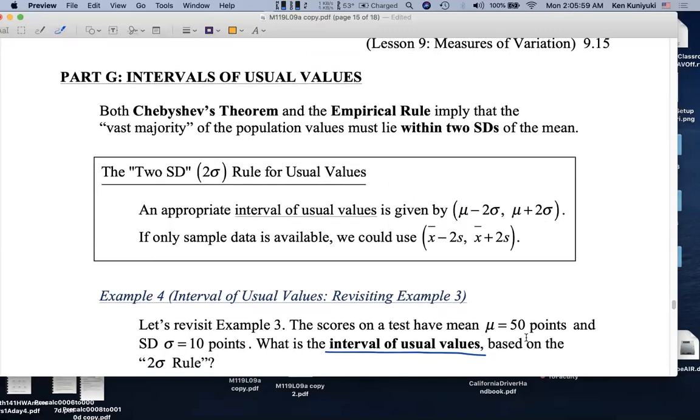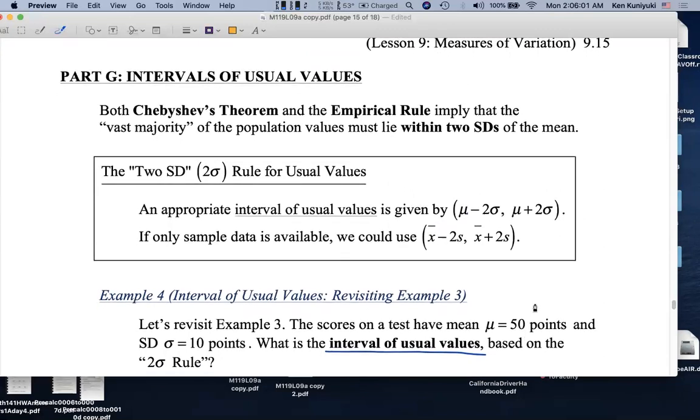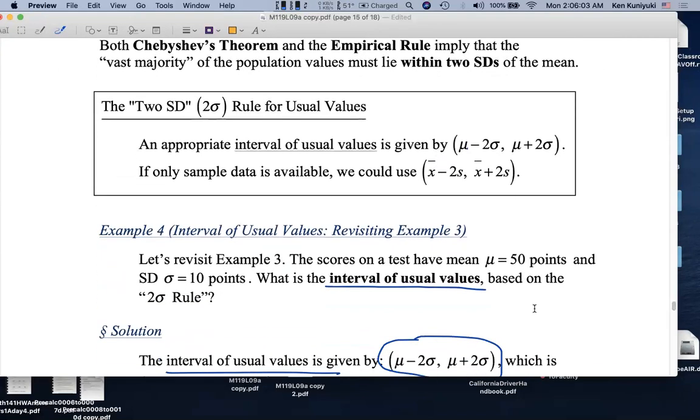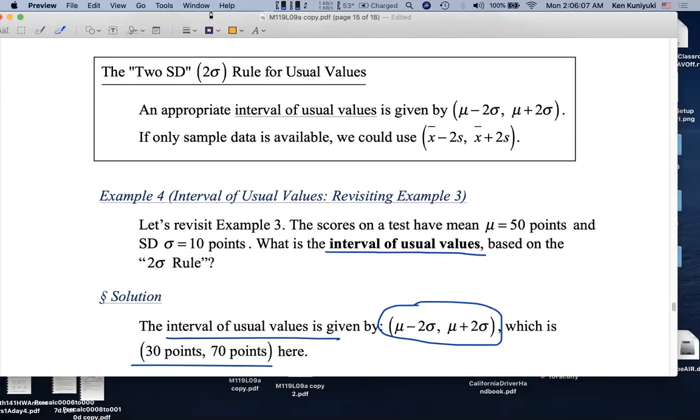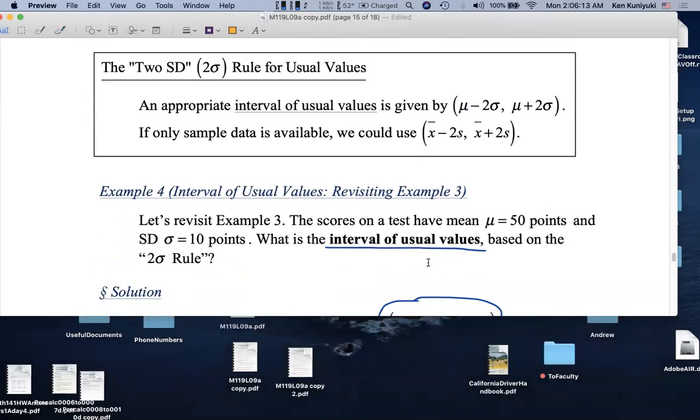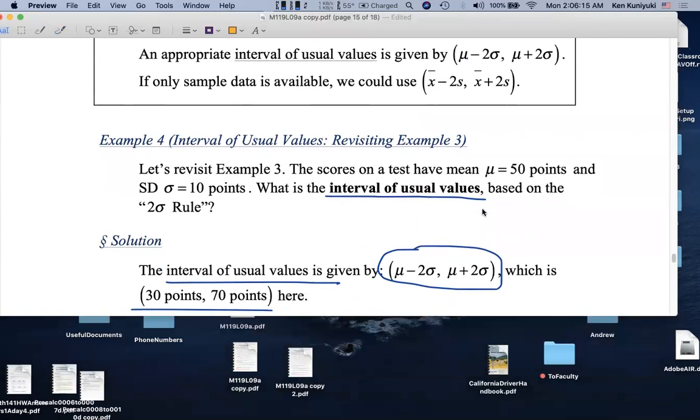So if you scored 31 points, or 68 points, based on the 2sigma rule, how would you classify yourself? If you scored 31 points, or 69 points, or certainly the mean, 50 points, then based on this rule, you'd be a typical or usual student.